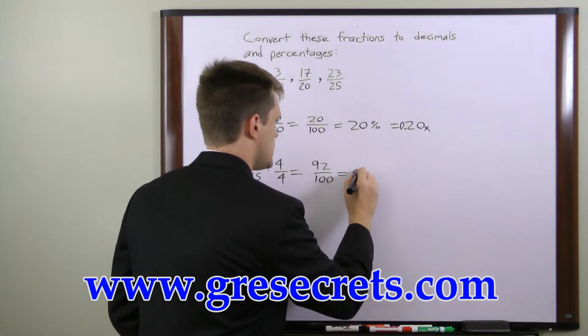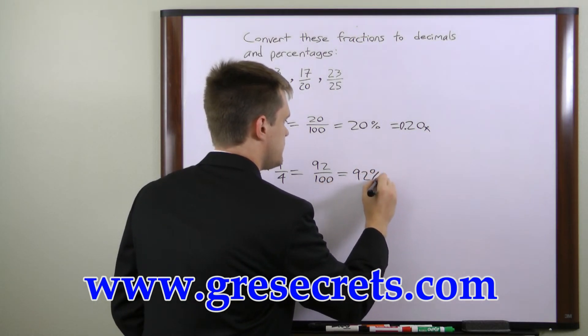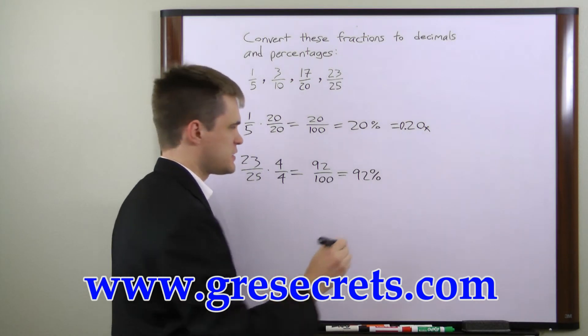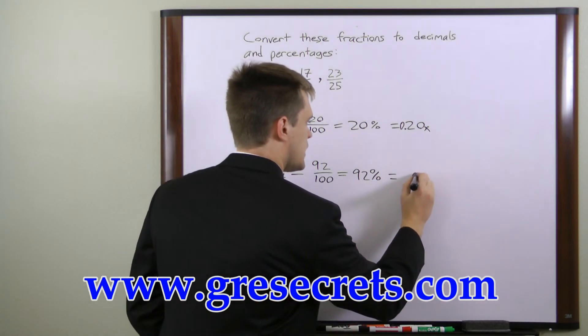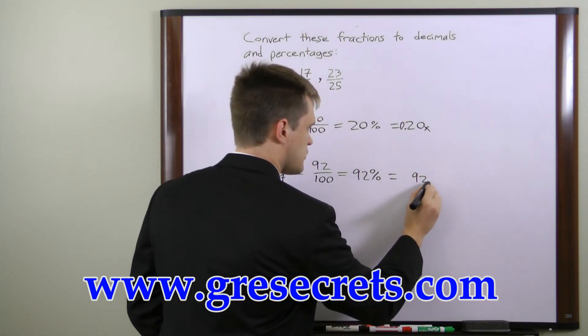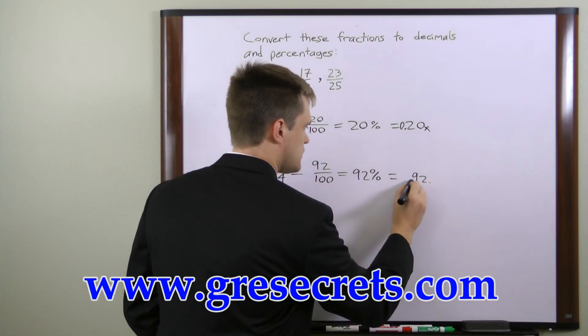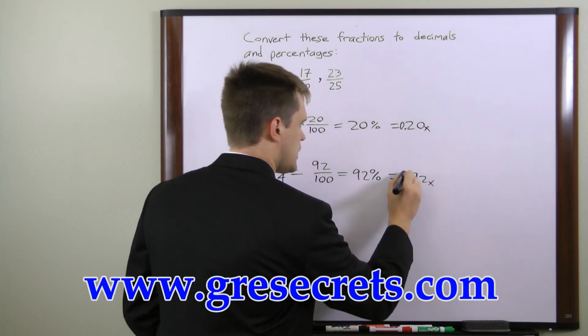So we can write it as a percentage, 92%, and as a decimal, 92. Move the decimal point two places to the left, right there, and add a 0.